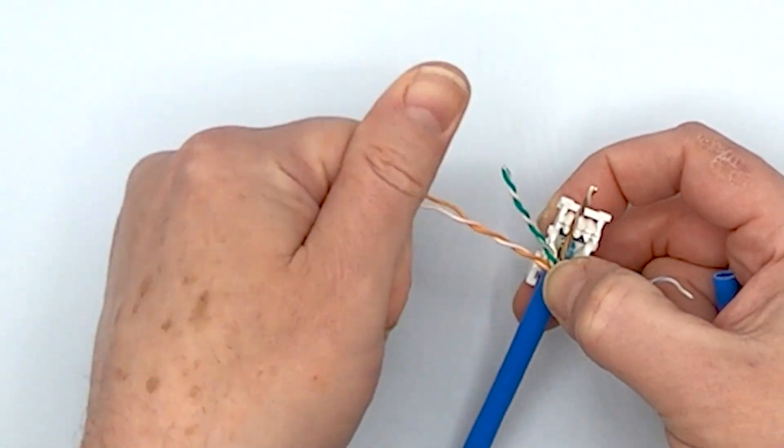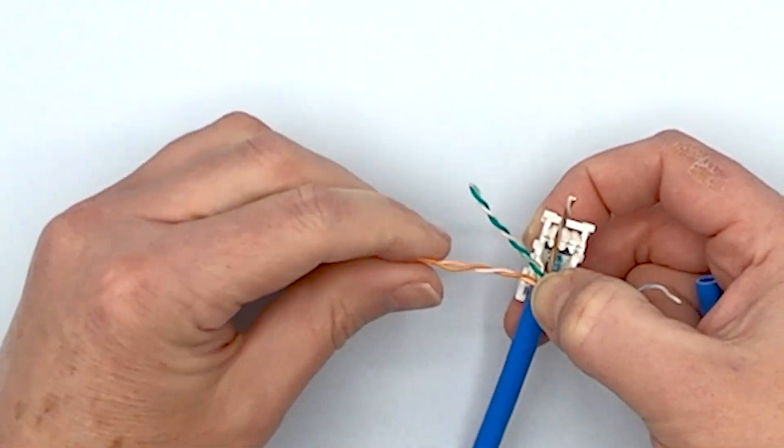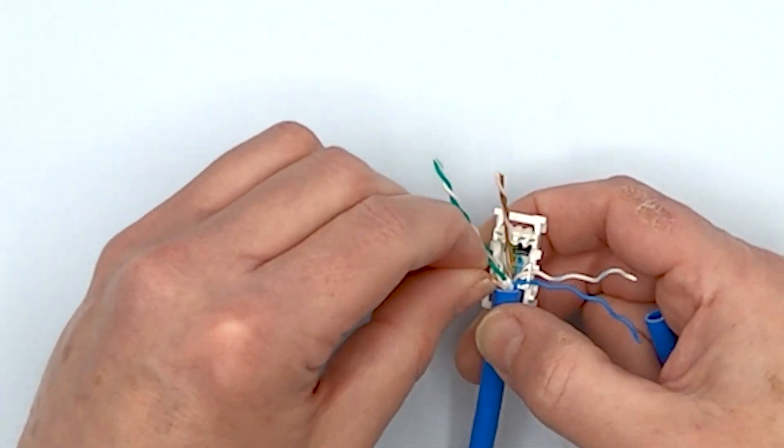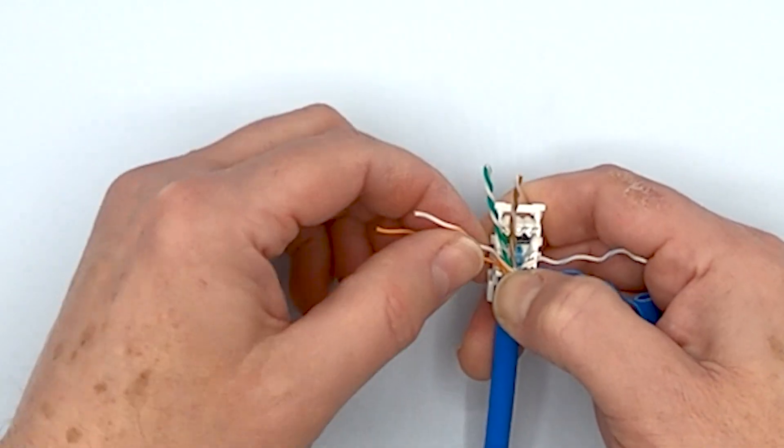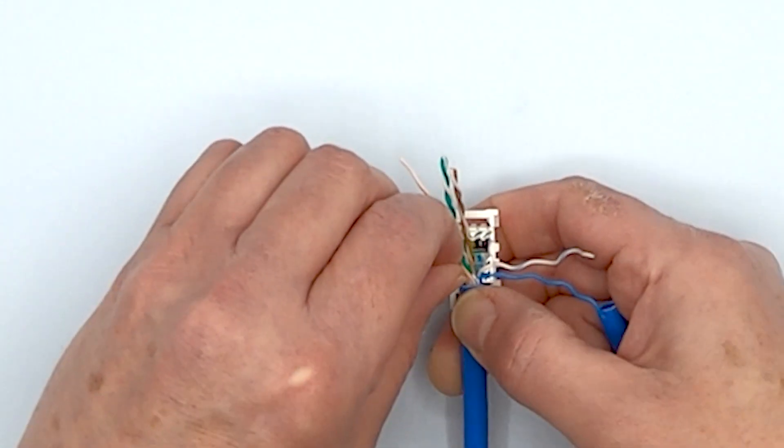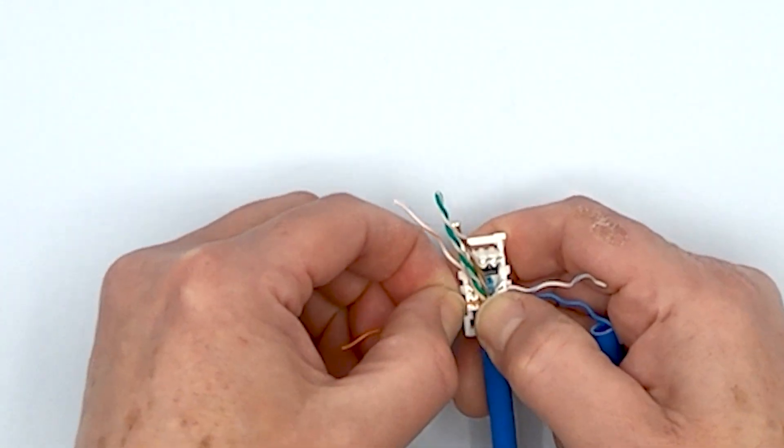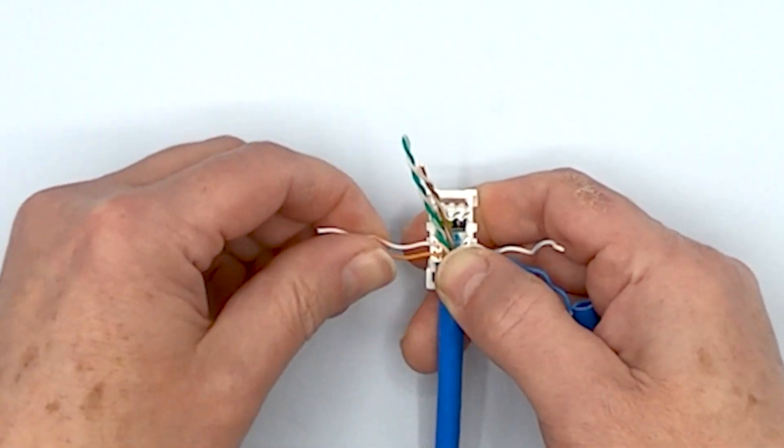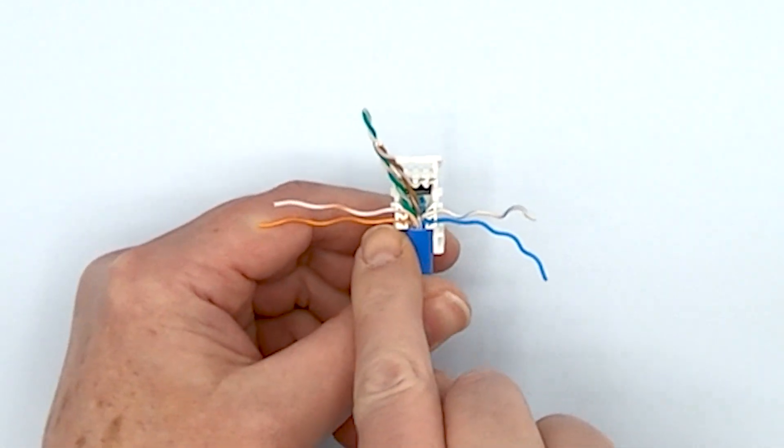Now we'll work with that orange rear pair. You can untwist with your fingers. You can use a piece of cable jacket. The cable jacket's useful because it keeps you from abrading your fingers. We know that the rear is always going to be the solid, so we're going to put that into the rear slot and then the striped orange goes into the front slot.